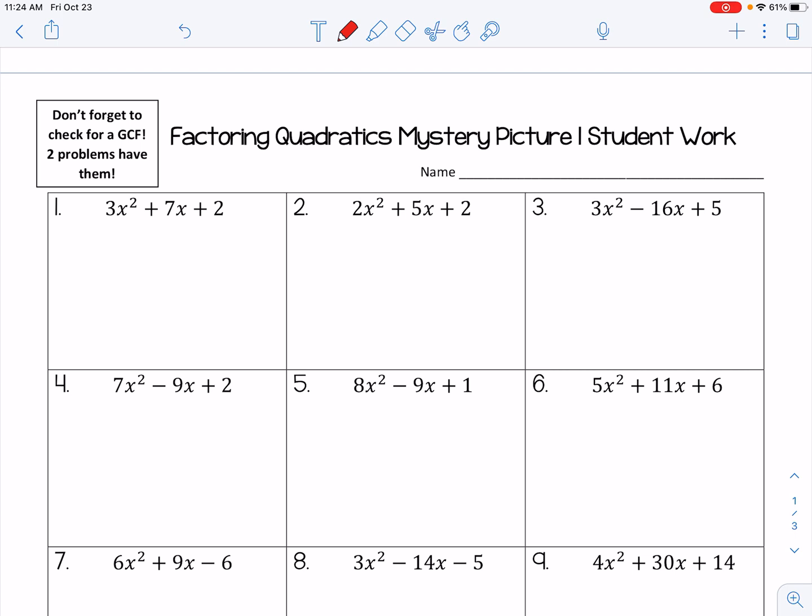I'm just going to do number one with you guys really quickly. So the first thing I want to look out for is that GCF. Do those numbers 3, 7, and 2 have a greatest common factor? No, they do not. So I'm just going to move forward.